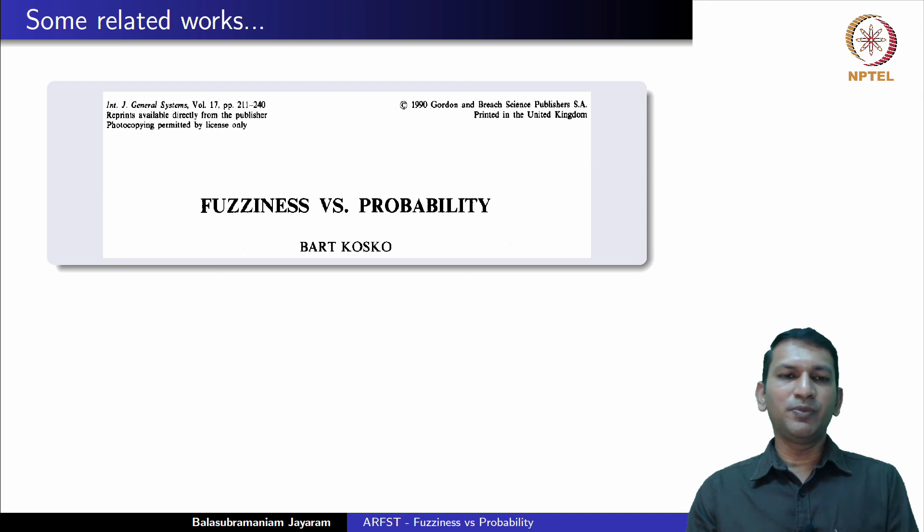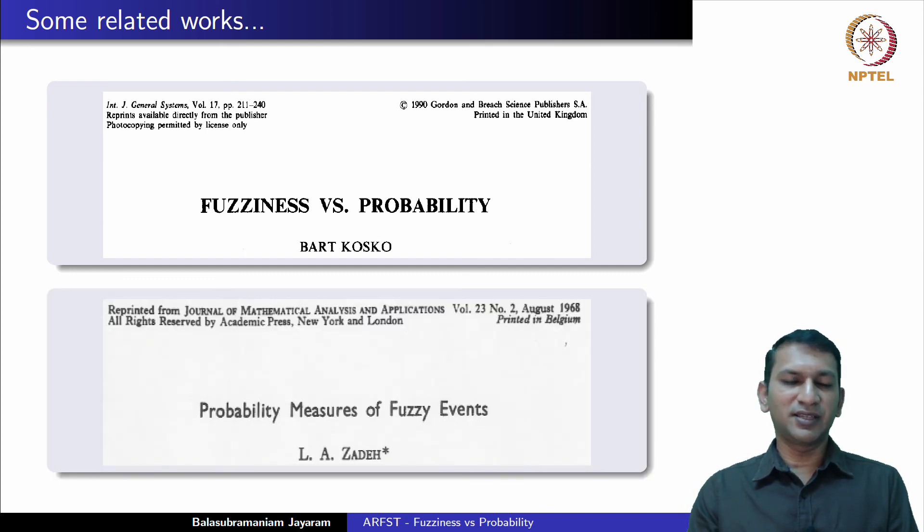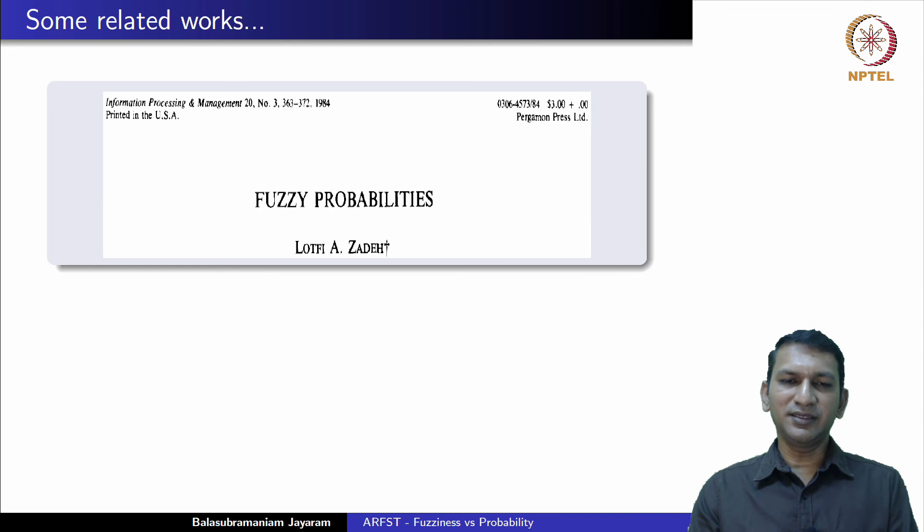Once again, allow me to refer you to some research level articles. Most of what I have covered in this lecture has been based on this excellent paper by Bart Cosco which is also titled Fuzziness versus Probability. Professor Zadeh himself, even as early as 1968, has discussed the relationship between probability and fuzziness. Not only in this paper, even a little later, almost after 20 years, we had another paper under the title Fuzzy Probabilities.